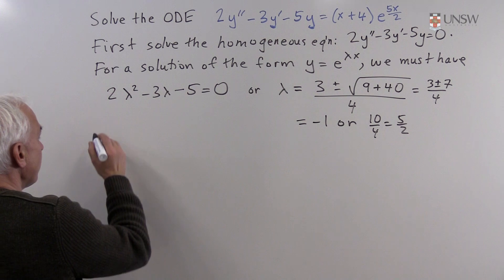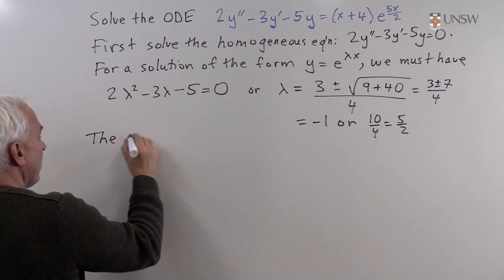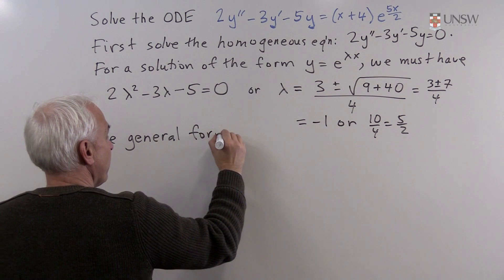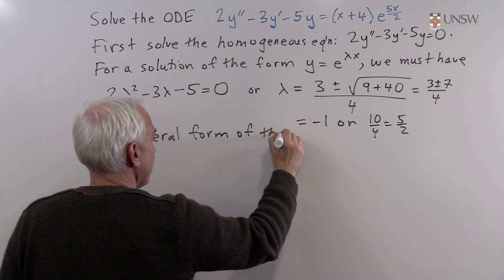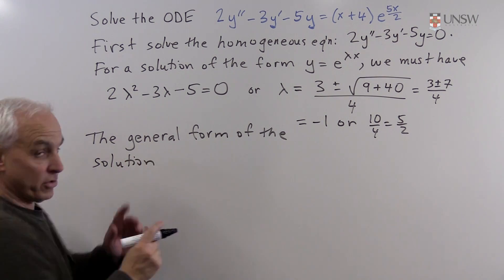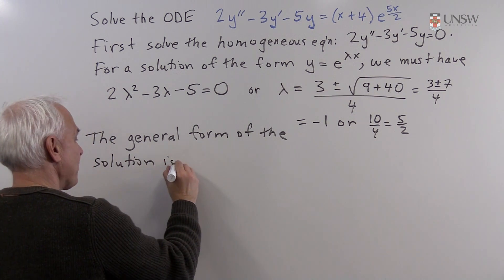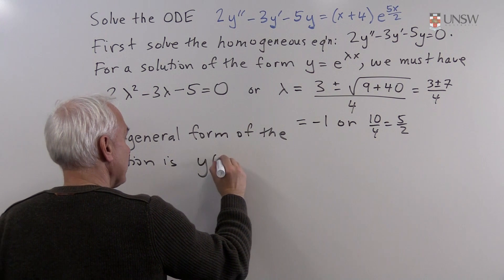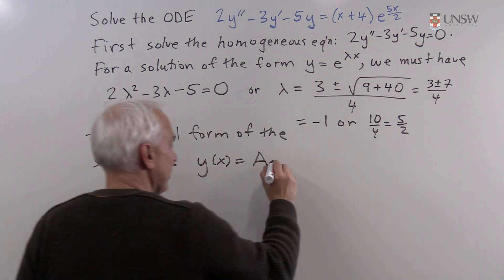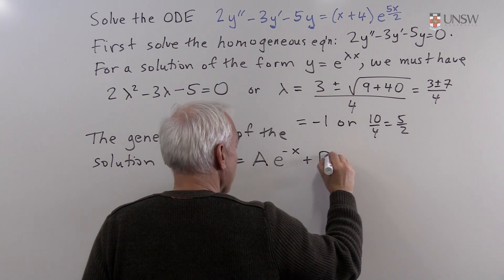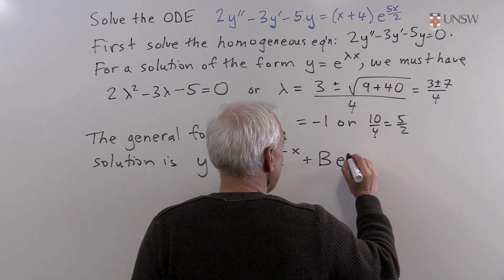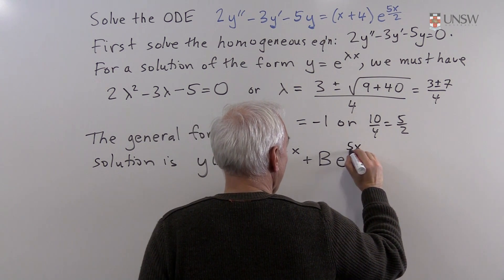The general form of the solution to the homogeneous equation is y(x) = A·e^(-x) + B·e^(5x/2), where A and B are arbitrary constants.